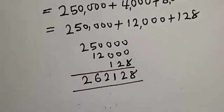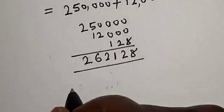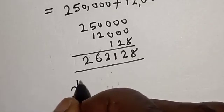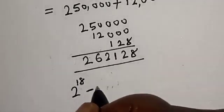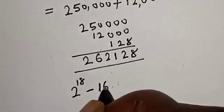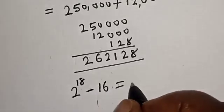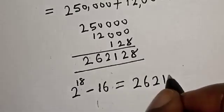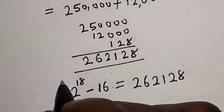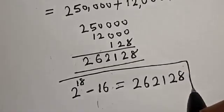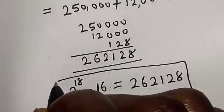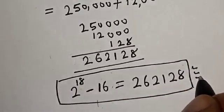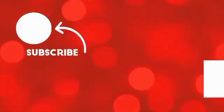Therefore, 2 raised to power 18 minus 16 equals 262,128. That is our final answer. If you enjoyed the class, please don't forget to like, share, comment, and subscribe. Thank you.